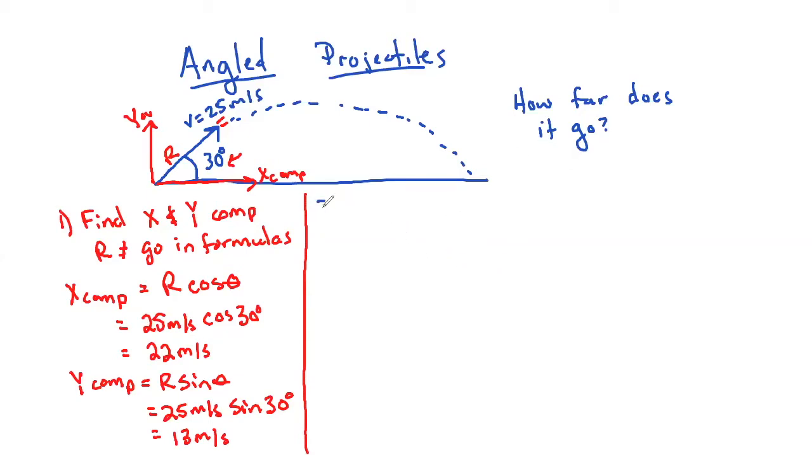The next step is find time to max height. And the way we're going to do that is we're going to use VF equals VI plus AT, which should be given to you. Remember, from previous units, the X's and the Y information can never, ever mix.